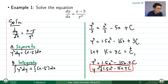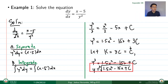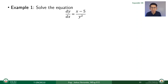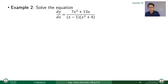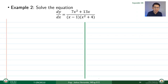This expression in y — y = ∛(1.5x² - 15x + c) — is what we call an explicit solution. This form will vary from one expression to another, as we'll see in the next examples. Let's move on to example number 2: dy/dx = (7x² + 13x) / ((x - 1)(x² + 4)). We are again asked to find the solution.